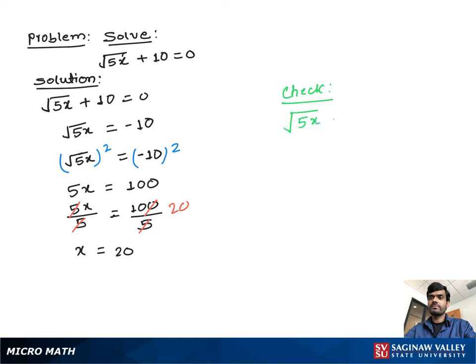We write square root 5x plus 10 equals 0. Now we substitute the x value, where x equals 20. We know that 5 times 20 is 100.